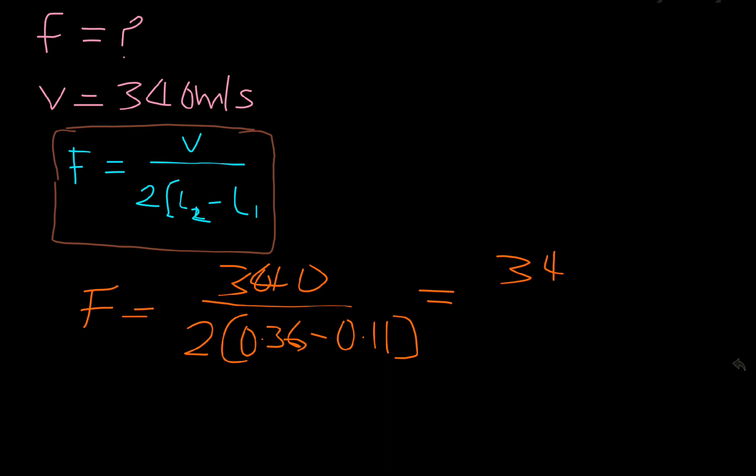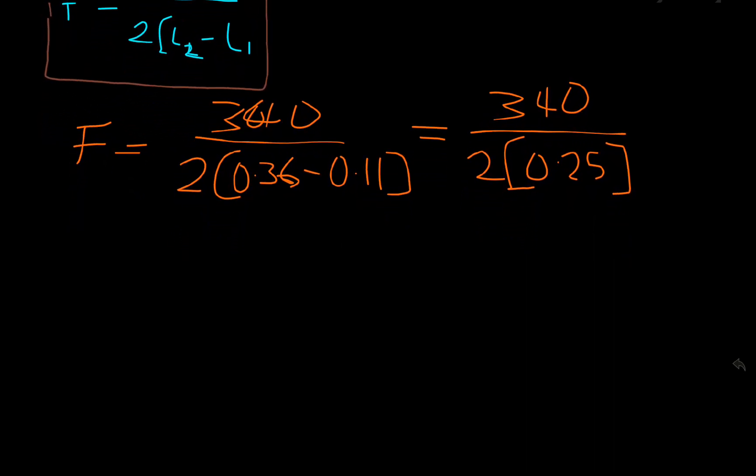And you get 340 over 2, open bracket, 0.25. If you punch your calculator and you punch 0.36 minus 0.11, you arrive at 0.25. And so, we're having frequency to be 340 over 2 times 0.25 would get 0.5.